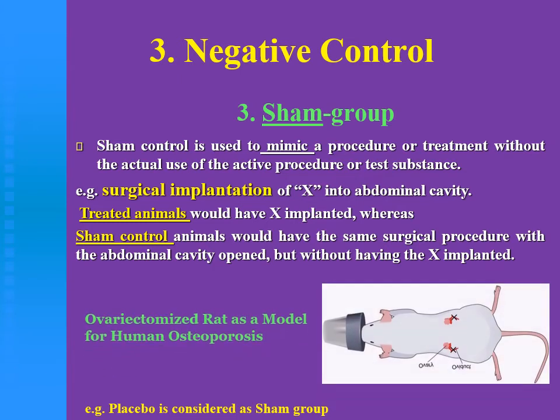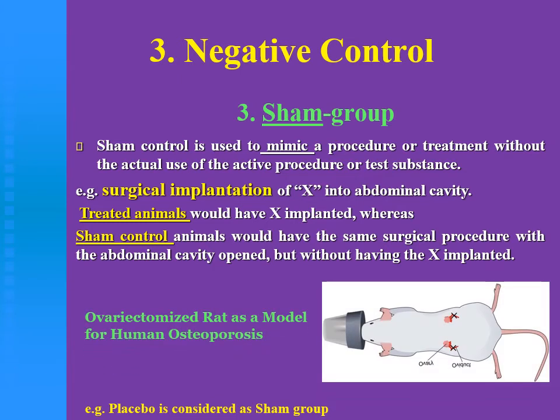مثال مشهور قوي هو الـ ovariectomized rat model of human osteoporosis. في الحالة دي، الـ ovariectomized group لازم يبقى فيه معاها control group لأنسميه sham operated — احنا بنفتح الأبدومن ونقفلها من غير ما نعمل ovariectomy.